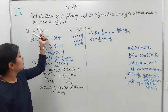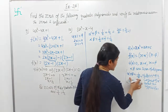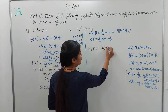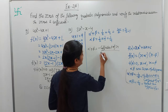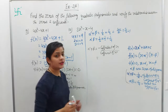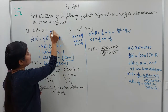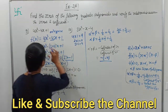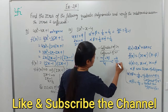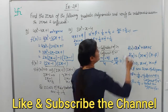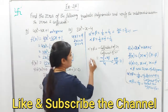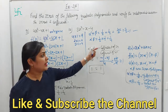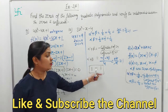Now, you have to verify the relationship between zeros and coefficients of the polynomial. We verify that the sum of zeros equals minus coefficient of x divided by coefficient of x². Comparing with ax² + bx + c, the value of b is -4. So we get: -(-4)/4 = 4/4 = 1. The sum from zeros was also 1. So the relationship is verified — alpha + beta from zeros and from coefficients are both equal to 1.